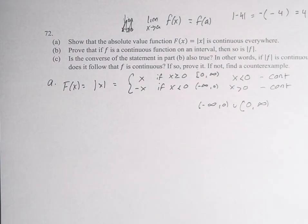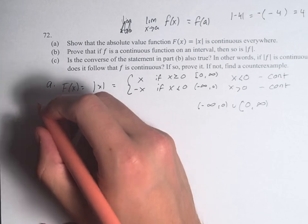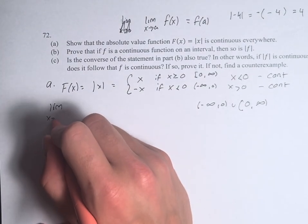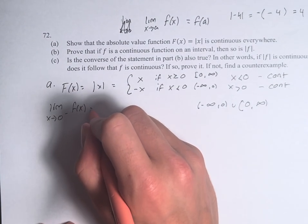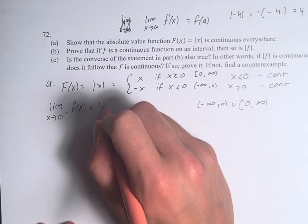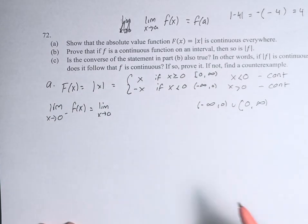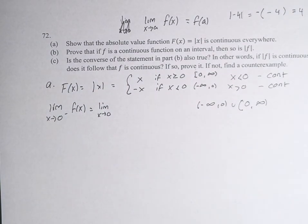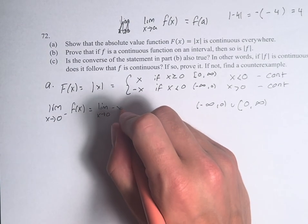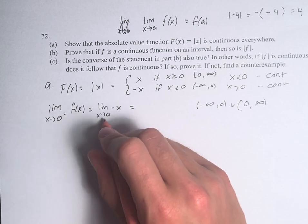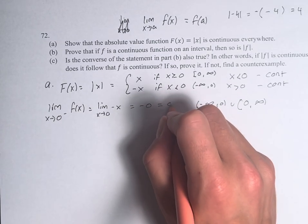So all we have to do to show that it's continuous everywhere is to show that it's continuous at 0. The limit as x approaches 0 from the left of f of x — as x approaches 0 from the left, those are values less than 0, so we're using negative x. Therefore, we just plug in negative 0, which is 0.